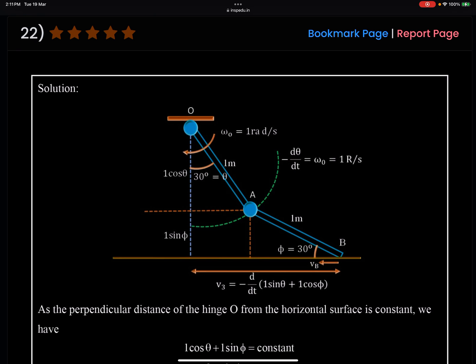Now this question is based on constraint relation. So here we are going to use a different level of constraints. There are many methods for solving this question. You can use instantaneous axis of rotation as well. But here the idea is to explain you that this constraint can be of any form. So constraint is basically a limitation, a restriction. So here restriction is distance of point O from the ground can never change. I hope you can understand this part.